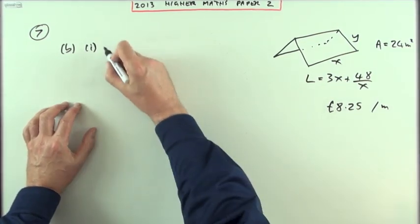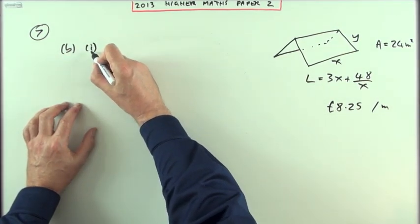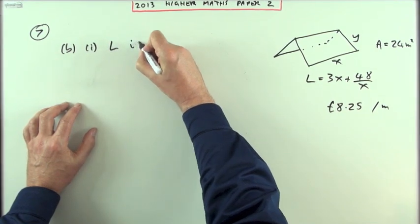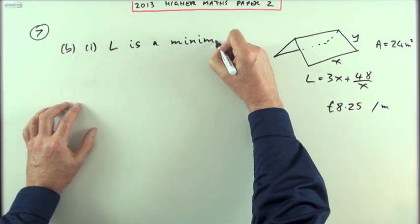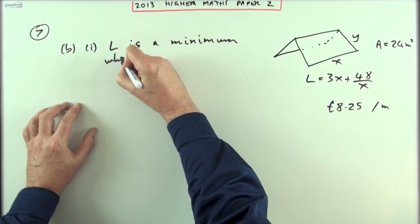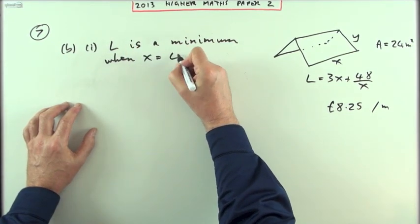Right, back up here, because I was running out of room there. Finish part b, part 1 formally. I would say L is a minimum when x equals 4.